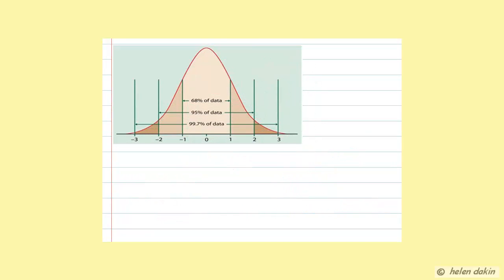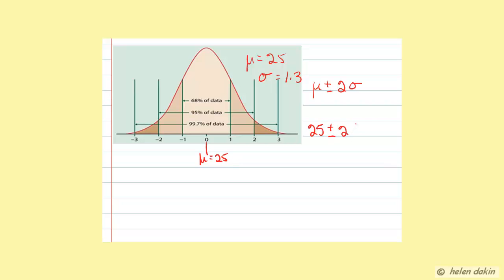The next question asks us to state the upper and lower limits for the mean plus or minus two standard deviations. The mean is 25 hours and the standard deviation is 1.3 hours. We want mean plus or minus two standard deviations, so substituting: 25 plus or minus 2 times 1.3, which is 2.6. The lower limit is 25 minus 2.6, which works out to 22.4.